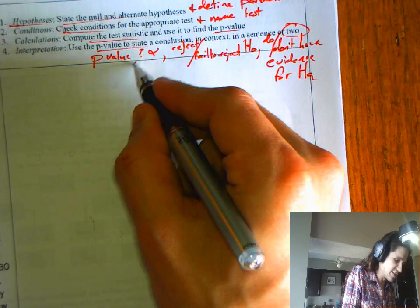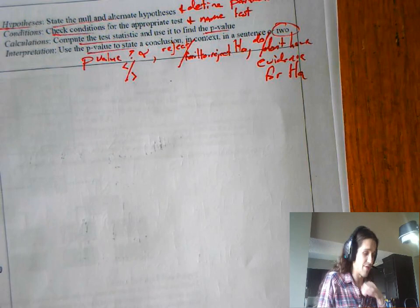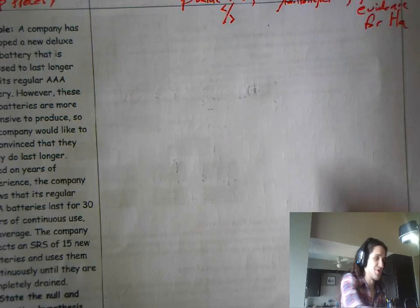We'll do that over and over. But the three things you're going to need in your conclusion statement are you're compared to alpha. If it's less than, you're going to reject. If it's greater than, you're going to fail to reject. If you reject the null, then you do have evidence for the alternative.